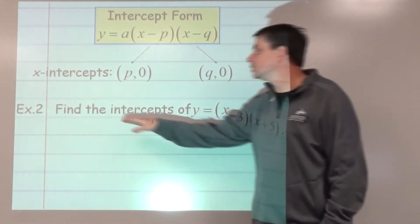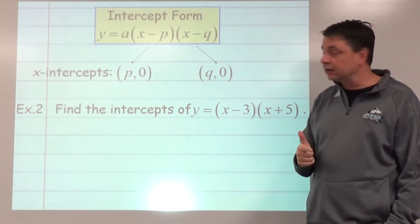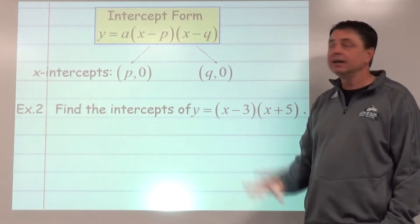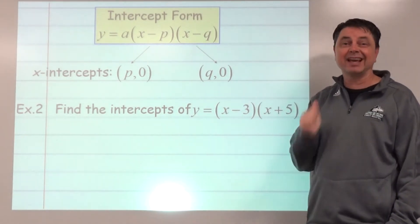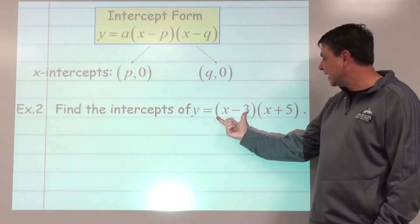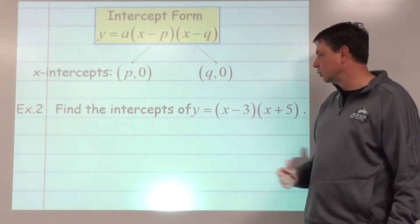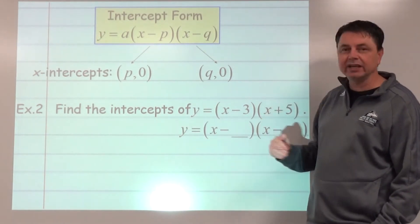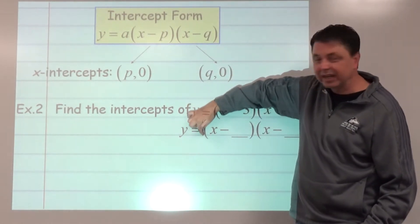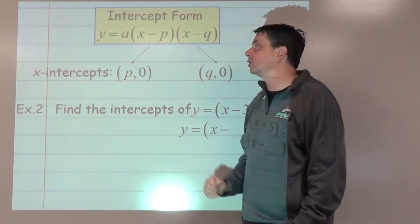Before we get to graphing, let's see if we can find the intercepts. For the graph y equals (x minus 3) times (x plus 5), which is in intercept form, we'll find x-intercepts and y-intercepts. The a value — an invisible 1 here — doesn't lead us to intercepts but does tell us something about the graph.